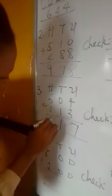604 plus 113. 4 plus 3 is 7, 0 plus 1 is 1, 6 plus 1 is 7.